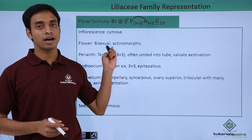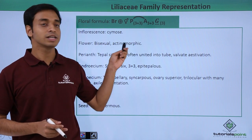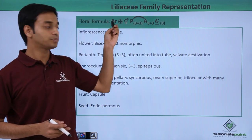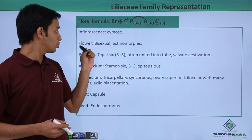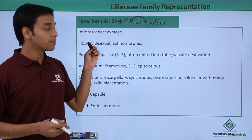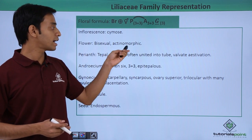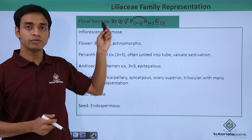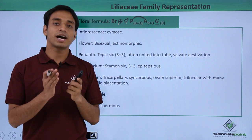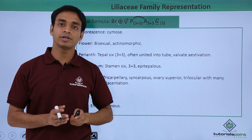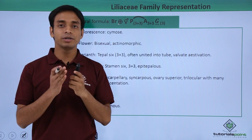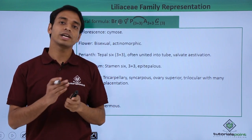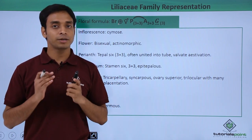The flower type is bisexual and actinomorphic. The actinomorphic symbol means they are radially symmetrical — they can be divided into two equal halves on any plane.